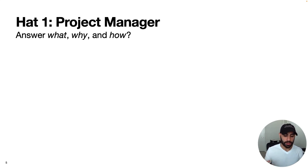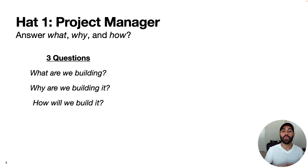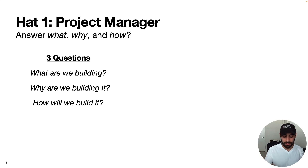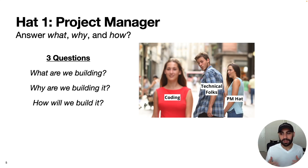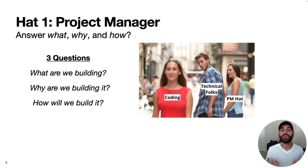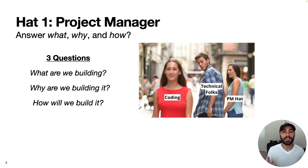Starting with hat one, the project manager. The key role of a project manager is to answer three questions: what are we building, why are we building it, and how are we going to build it? While this might sound simple, it's not uncommon for people — especially technical folks who want to dive into implementation — to gloss over or skip this step entirely. If you skip it, you run the risk of spending a lot of time and money solving the wrong problem, or solving the right problem in an unnecessarily complex and expensive way.